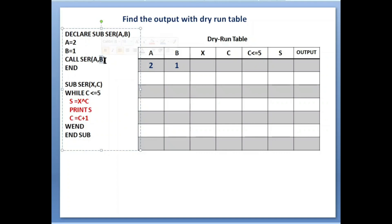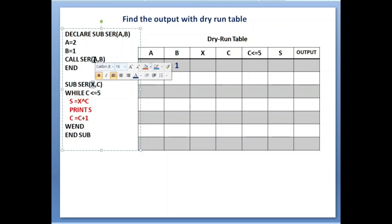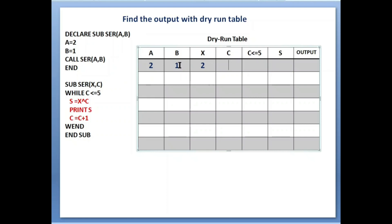The value of a is 2 and the value of b is 1. From here, control goes directly to the sub procedure. In the sub procedure bracket we have x and c. The value of a, the first variable, will be received by x, so x equals 2. The next parameter b will be received by c in the same sequence, so value of c is 1. So a and b values are received by x and c in the same sequence.